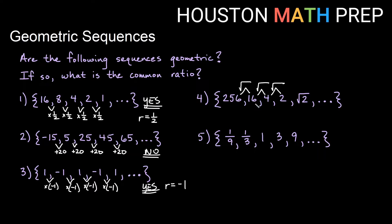If you look from 16 to 4, what do I multiply by to get from here to here? The answer is I would multiply by one fourth to get from 16 to 4. But then to get from 4 to 2, we're not multiplying by one fourth — 2 is half of 4. If I take this term divided by the previous one, I can tell the ratio between those two terms is one half. So we're not multiplying by the same thing. There is a pattern, but it is not multiplying by the same number. So no, this is not geometric.